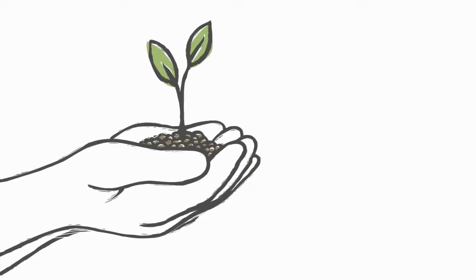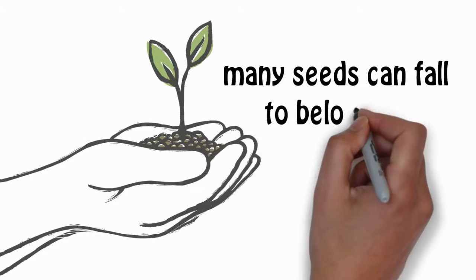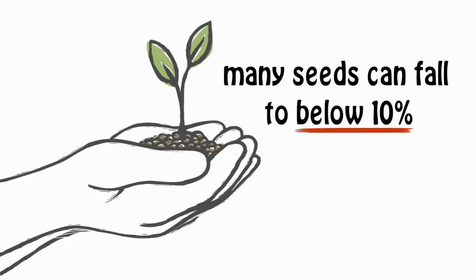If these same crop year seeds are improperly stored for a third year before planting, germination rates for many seeds can fall to below 10%.